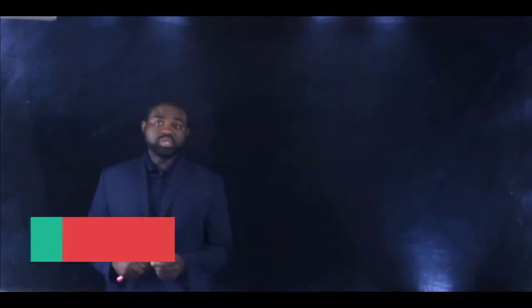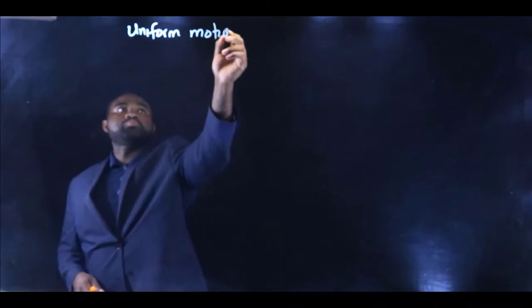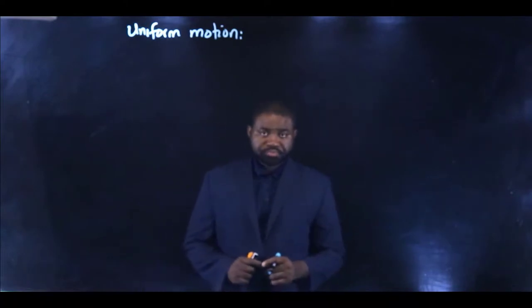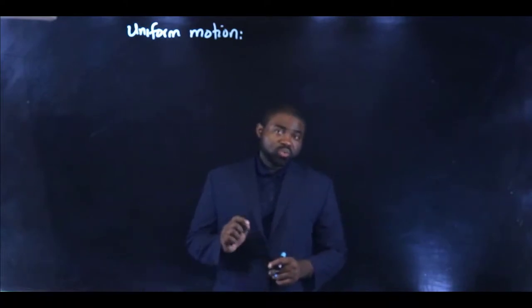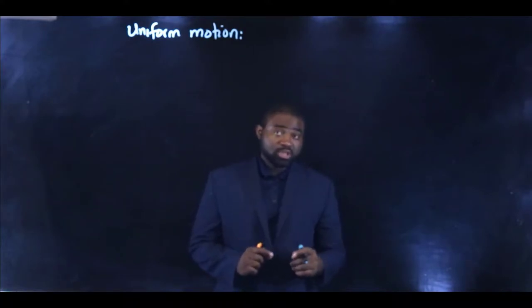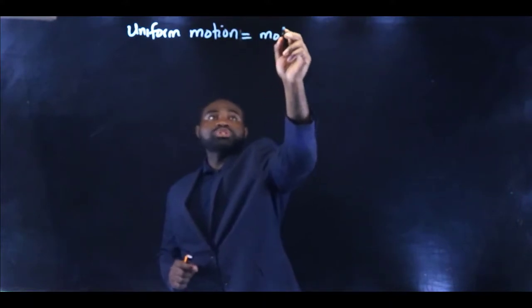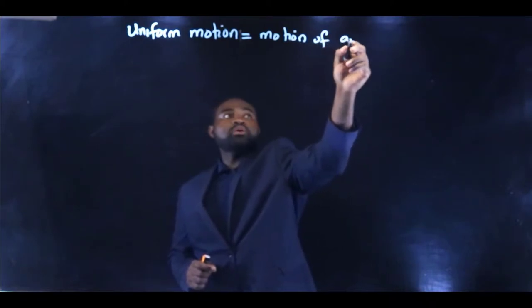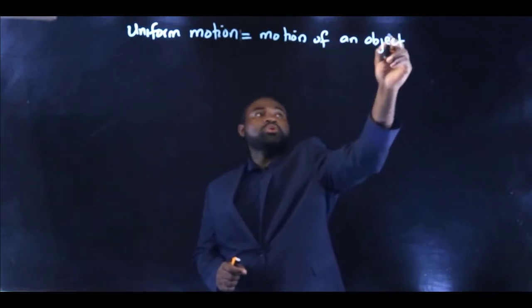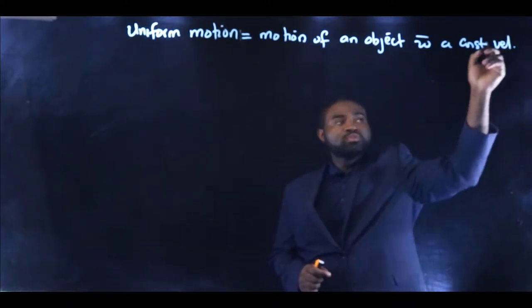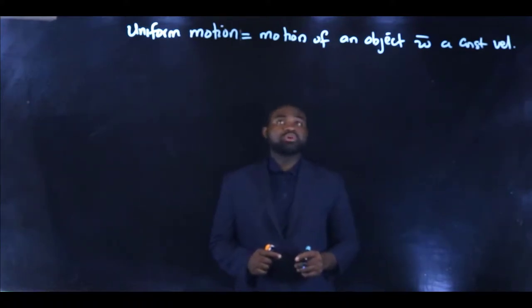Uniform motion. What do I mean when I say the motion is uniform? Uniform motion is when an object moves with a constant velocity—the motion of an object with a constant velocity.